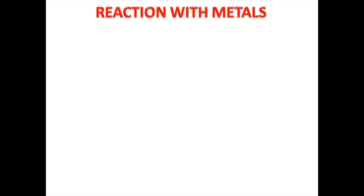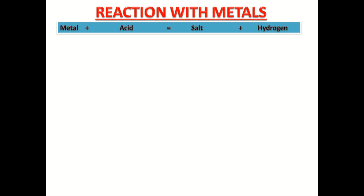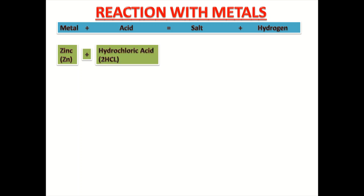I have told you about acids and its properties. Let us see what happens when these acids react with metals. When metal reacts with acid, salt and hydrogen is formed. Let us see its example. Here, zinc is a metal. When it reacts with hydrochloric acid, it forms salt, i.e. zinc chloride, ZnCl2,